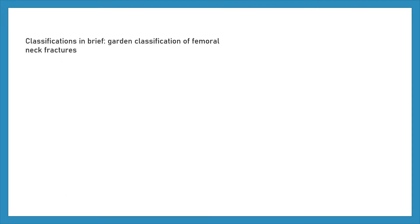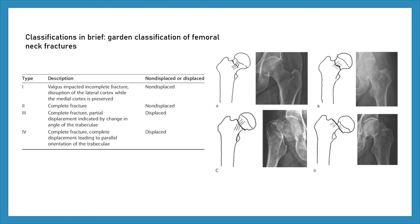Description of Garden classification of femoral neck fractures: Type 1 — valgus impacted incomplete fracture, disruption of the lateral cortex while the medial cortex is preserved. Type 2 — complete fracture. Type 3 — complete fracture and partial displacement indicated by change in angle of the trabeculae. Type 4 — complete fracture and complete displacement leading to parallel orientation of the trabeculae.